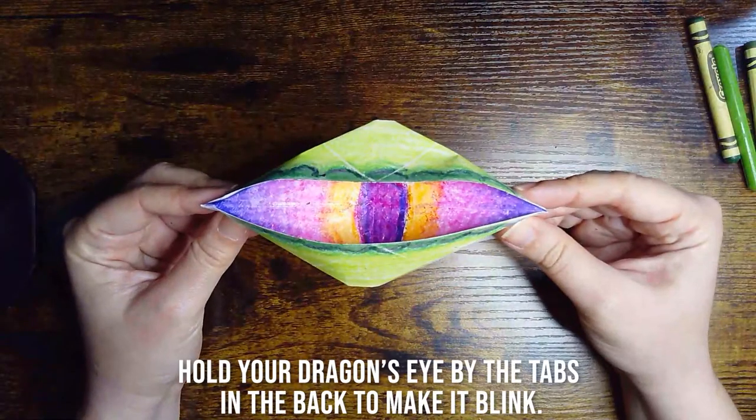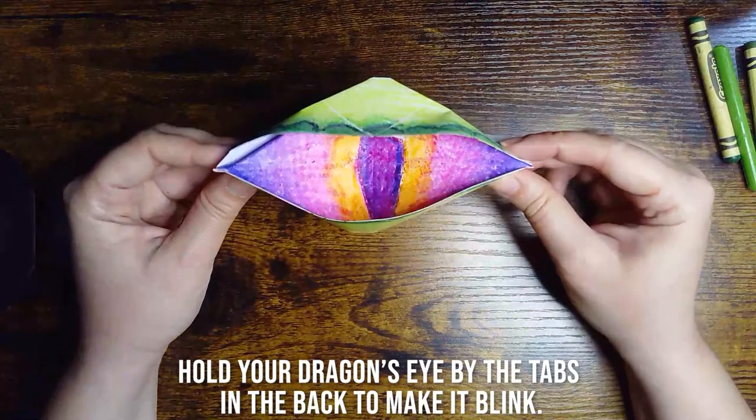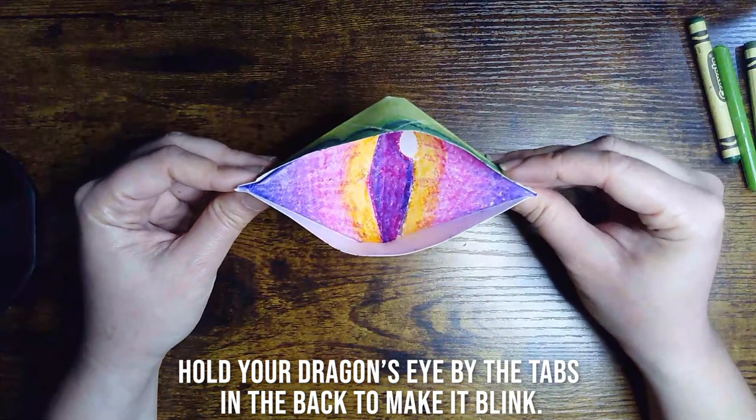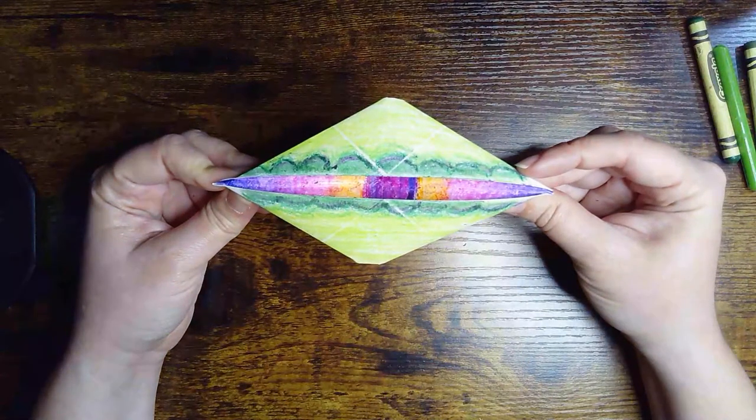Once you've finished coloring, you can pick up your dragon eye by the little tabs in the back. You might need to poke out the eyelid a little bit to make it stick out, and you should be able to open and close the eye and make your dragon blink.